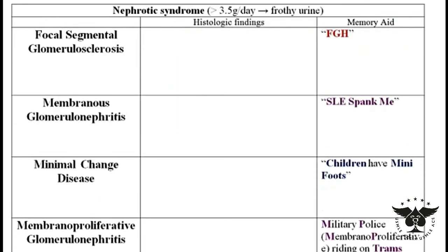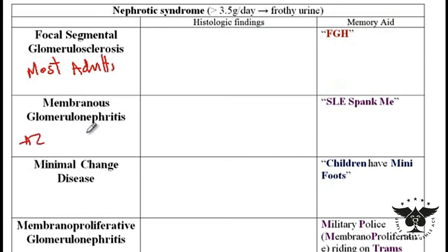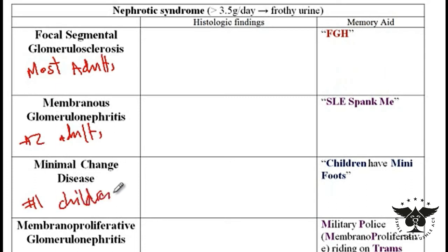Here is a list of the nephrotic syndromes. Focal segmental glomerulosclerosis is the most common form of nephrotic syndrome in adults. Membranous glomerulonephritis is the number two cause of nephrotic syndrome in adults, while minimal change disease is the number one cause of nephrotic syndrome in children.